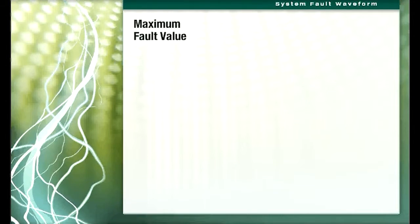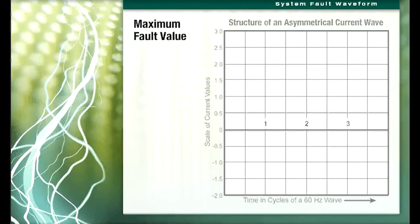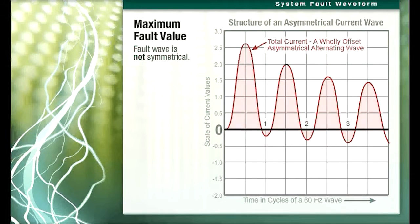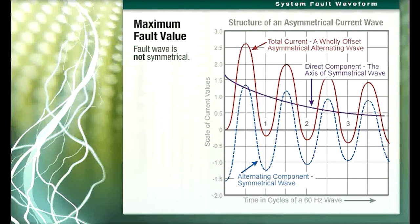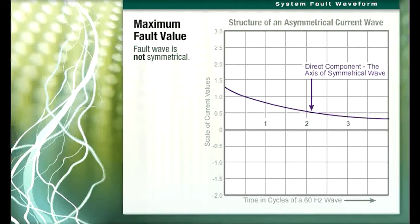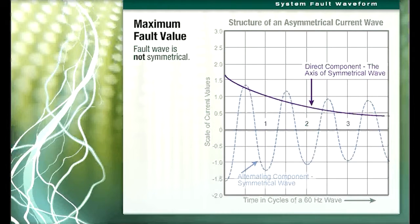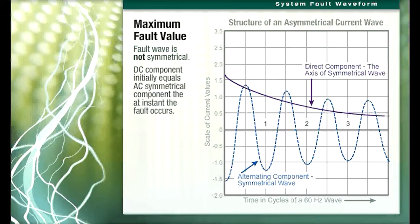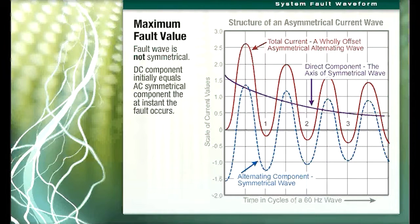In determining the maximum value of fault current at some point in a system, it should be noted that the fault current wave is not symmetrical about the zero current axis for several cycles after the fault occurs. This asymmetrical fault current wave is composed of two components: the symmetrical fault current and a direct current component whose magnitude is determined by the point on the voltage wave at which the fault occurred. The magnitude of the DC component can vary from zero to a maximum equal to the peak of the symmetrical AC component. At any instant after the fault, the magnitude of the total asymmetrical current is equal to the algebraic sum of the symmetrical AC and the exponentially decaying DC component.